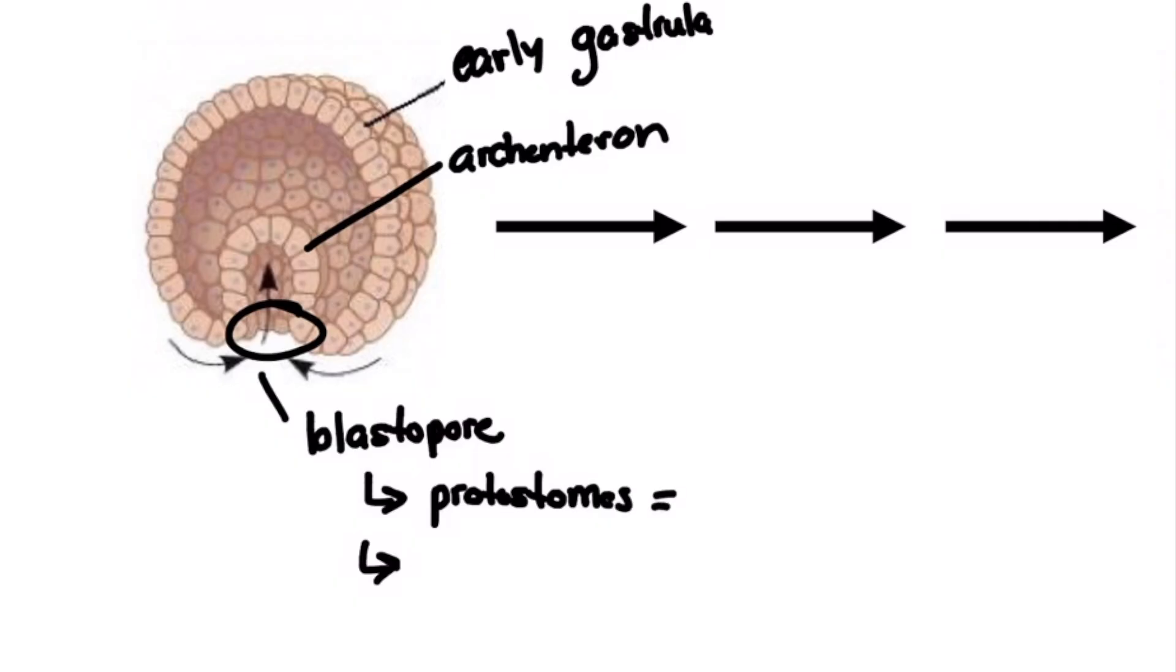In protostomes, the mouth forms from the blastopore. In deuterostomes, the anus forms from the blastopore.